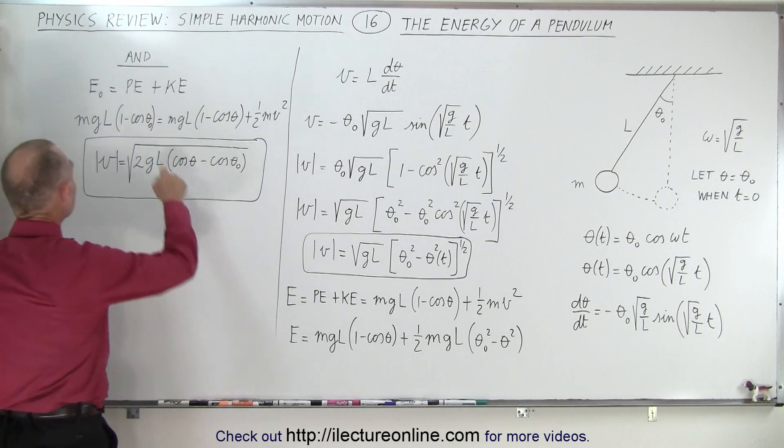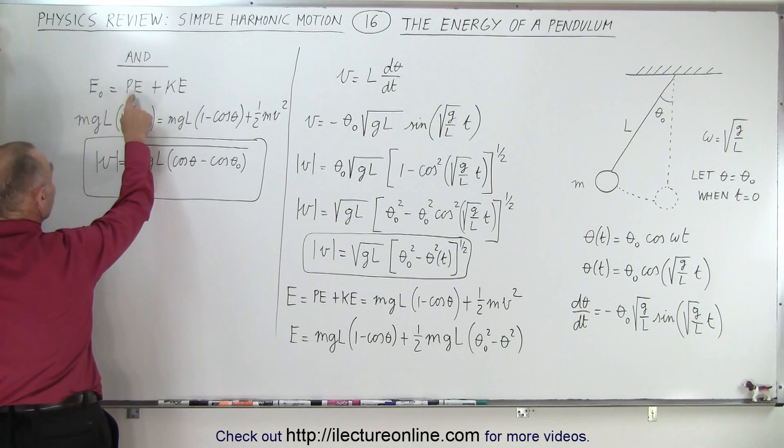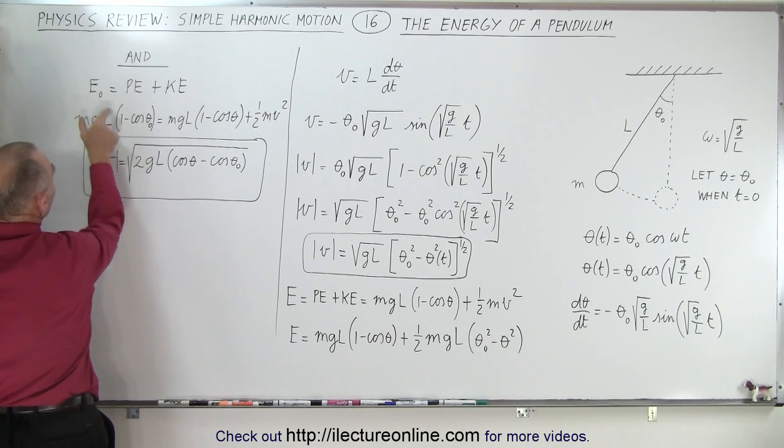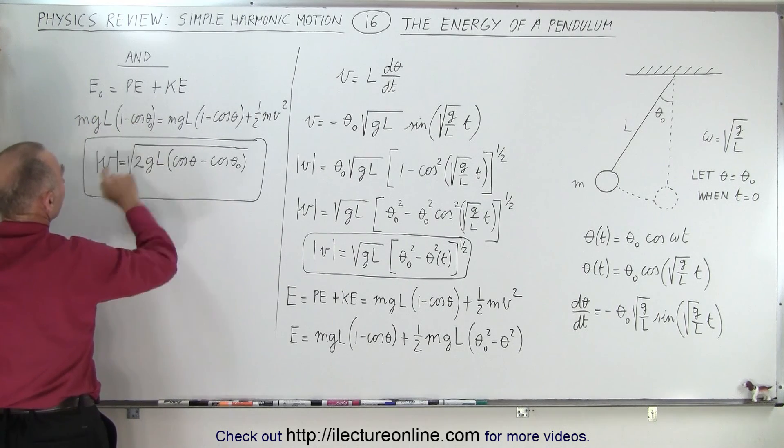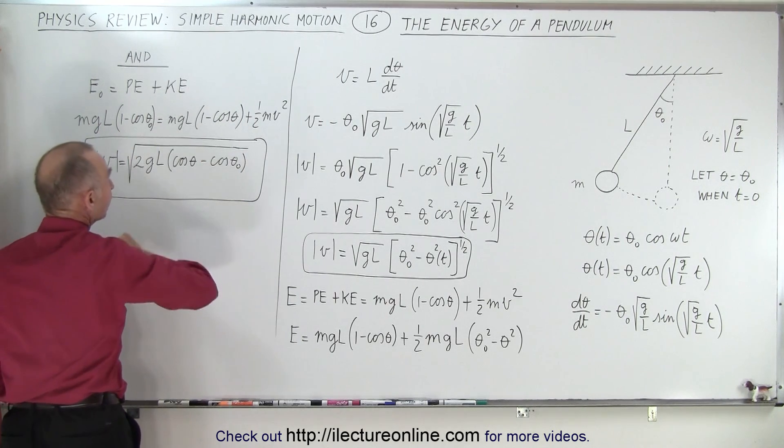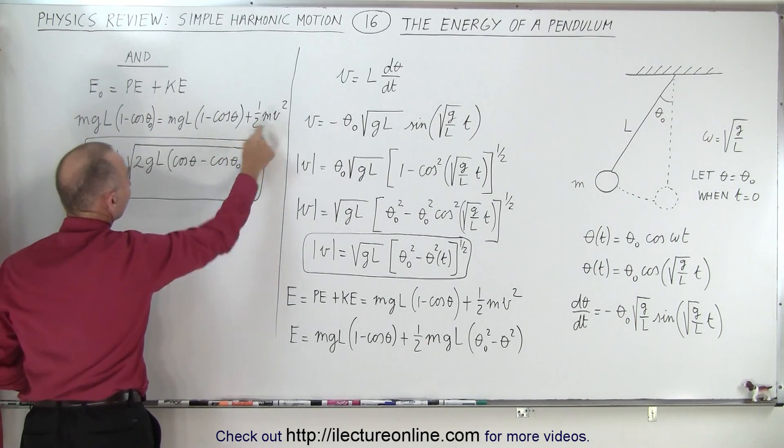Or we can also say that the initial energy of a pendulum is the sum of the potential and kinetic energy. The initial energy will always be this, with the initial angle. The potential energy will always be this, where the angle is a function of time. And then plus one-half mv squared.